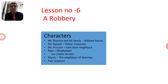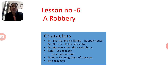This lesson is about a case of robbery, 5 suspects, and who is the real culprit. You can see in the chapter how the police inspector found the real culprit. This lesson is very interesting.